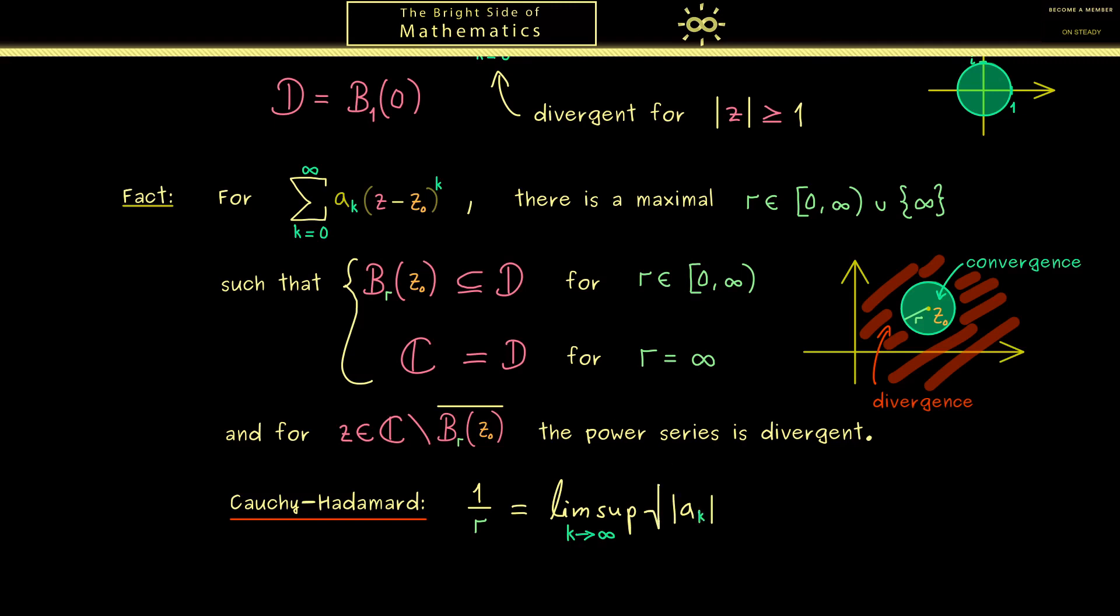Namely we look at the coefficients a_k in the absolute value. And then we take the kth root of this real number. Then we take the limsup k to infinity and we know this always exists.